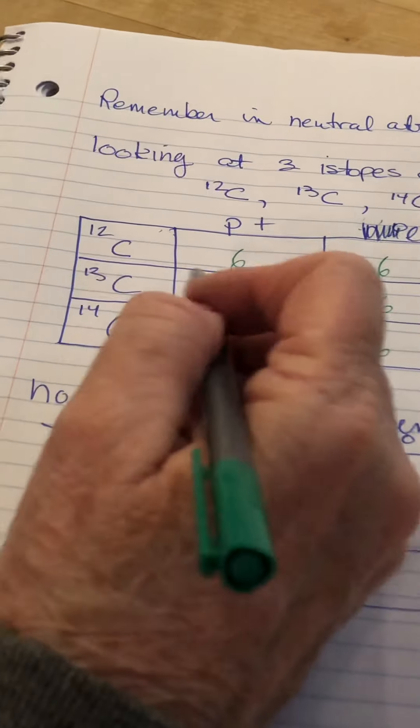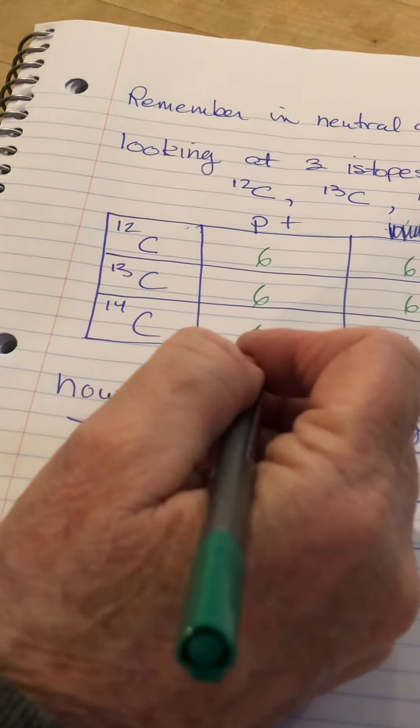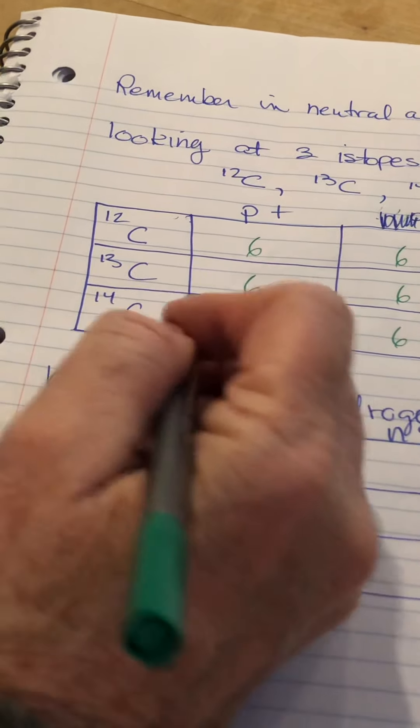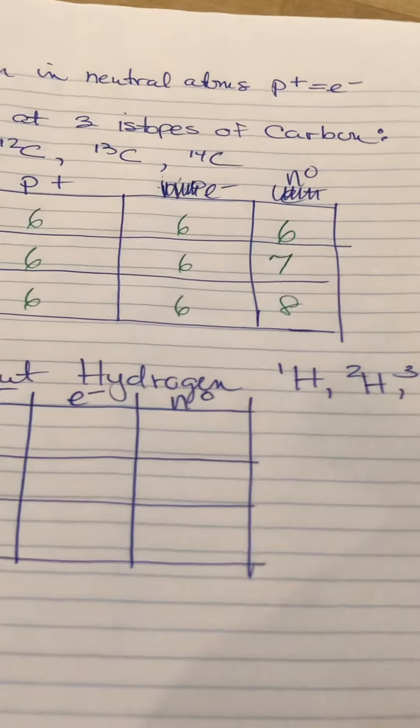How about this? I want to know the neutrons. Neutrons are mass number minus protons. 12 minus 6 is 6. Neutrons for carbon-13: 13 minus 6 gives you 7. Neutrons for carbon-14: 14 minus 6 gives you 8. See? Isn't that fun? I think it's fun.